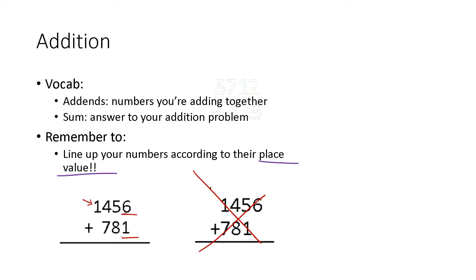So with that said, let's go over a few examples and make sure that we're all on the same page. I recommend stopping the video when I move to a new problem, trying them on your own, and then playing the video and we'll go over them together. So let's start here: 5712 plus 233. Always start adding over here in the ones column. Two plus three is five. One plus three is four — if you have to count on your fingers, I won't judge. Seven plus two is nine. And then we have five. Pretty straightforward.